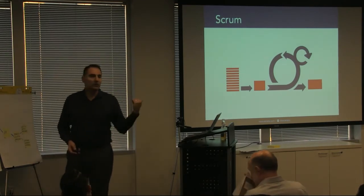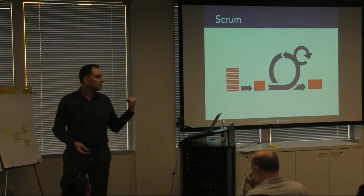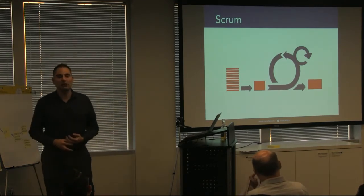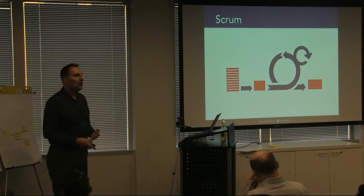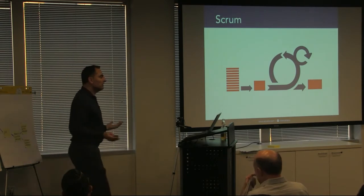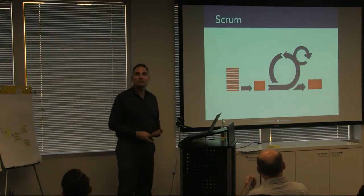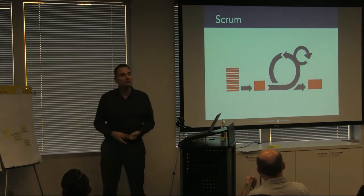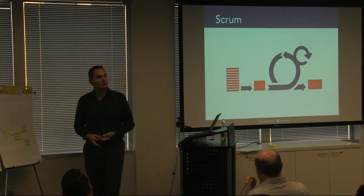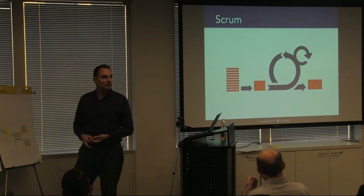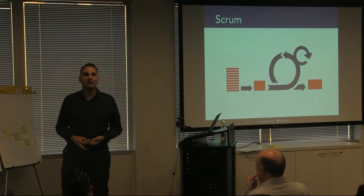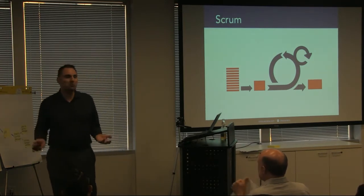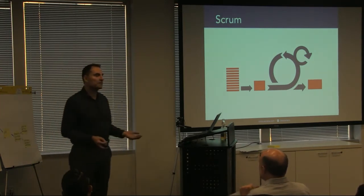If we look at the classic Scrum model, how many learning loops are baked into it? What loops can you see?